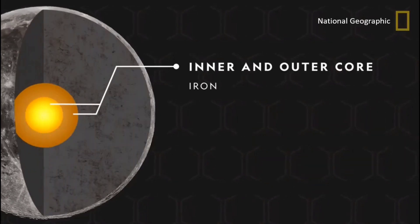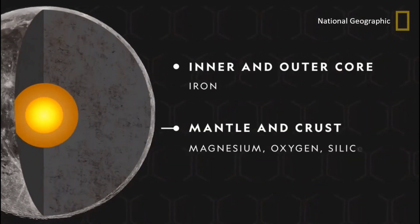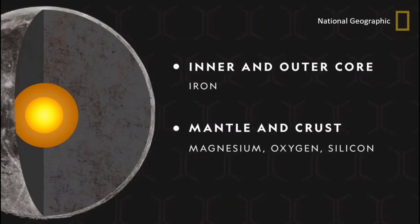The moon is composed of an iron-rich core, plus mantle and crust containing minerals made of magnesium, oxygen, and silicon.